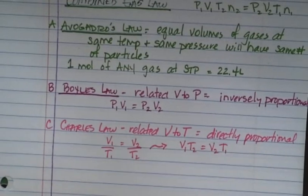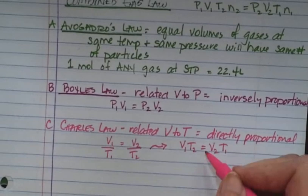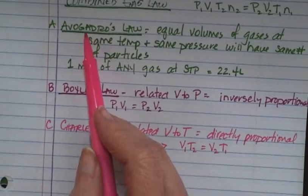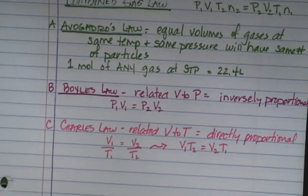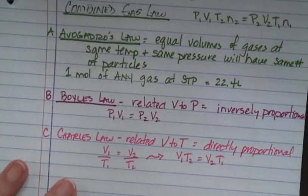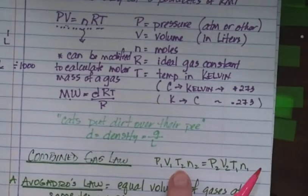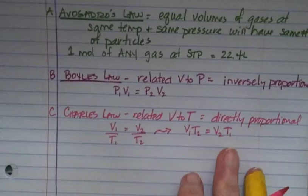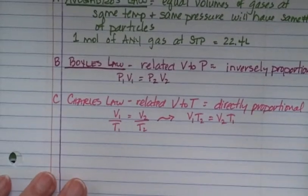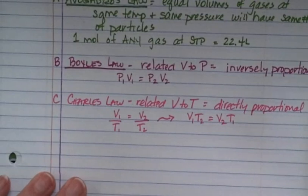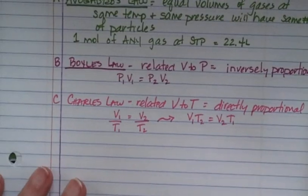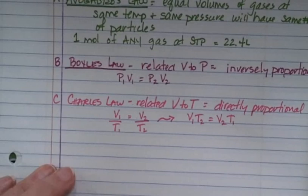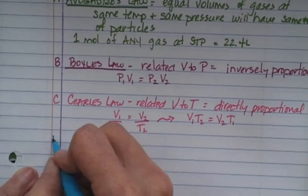We can also incorporate the number of moles, which is why when you look up at my combined gas law it also has the N for number of moles. The fourth one, keeping alphabetical order as D, is Dalton's law of partial pressure.